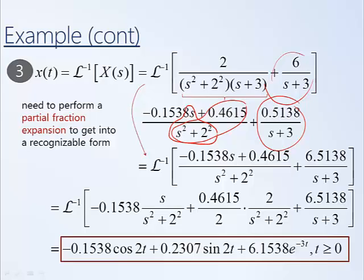Recalling what our poles were — minus 3 and plus or minus 2j — the negative 3 is completely real, corresponding to exponential decay with no oscillation since it had no imaginary part. Negative 3 was also the root of the characteristic equation, so this part is the homogeneous solution. We also had a forcing function that was a sinusoid of frequency 2, so the particular solution has the same form as the forcing function. The sine and cosine of the same frequency give us a sinusoid of frequency 2, corresponding to the poles plus or minus 2j, where the imaginary portion of the pole tells us the frequency of oscillation, and the real part equal to 0 means it neither decays nor grows.